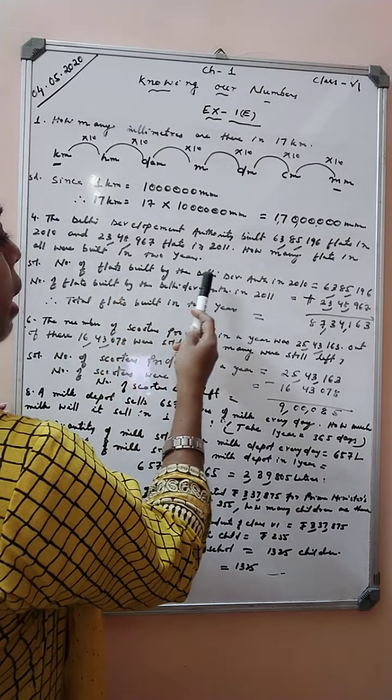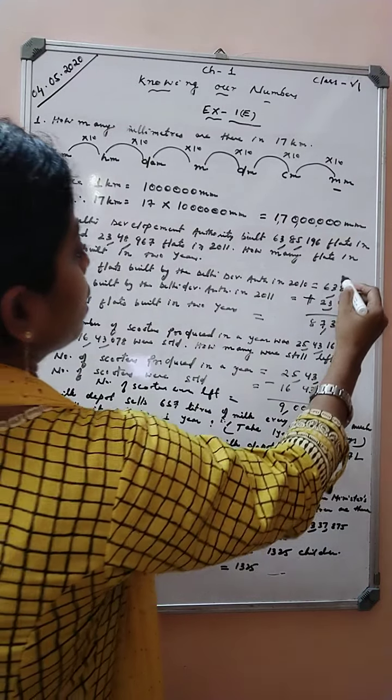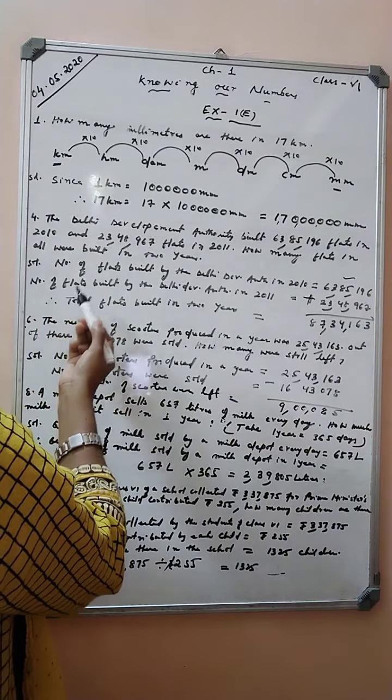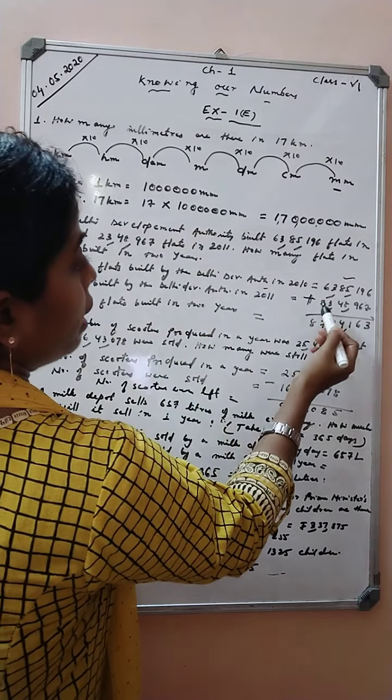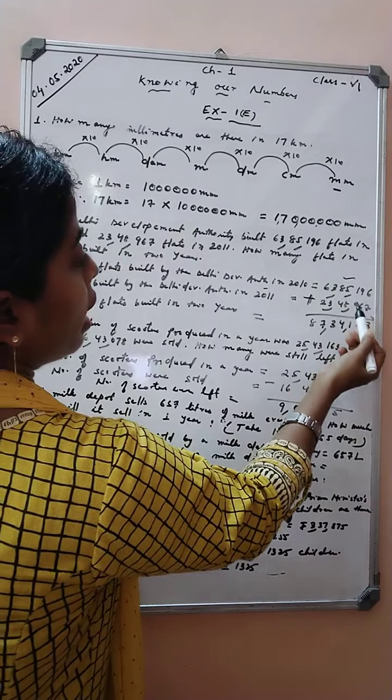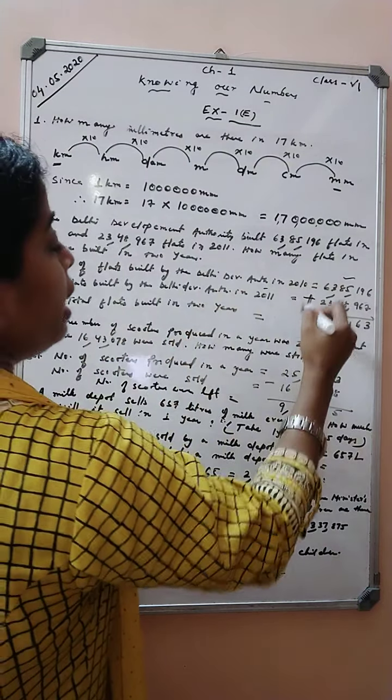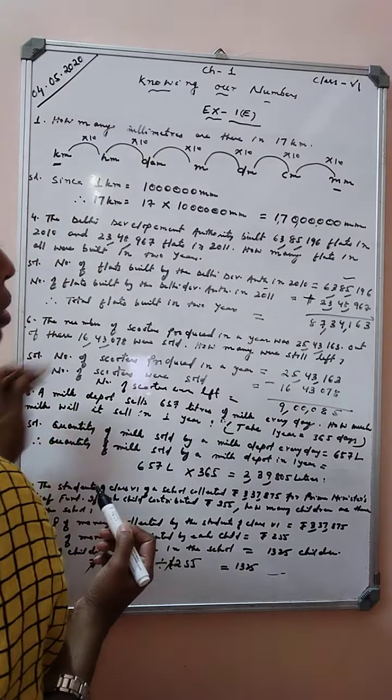Number of flats built by Delhi Development Authority in 2010: 63,85,196. Number of flats built in 2011: 23,48,967. Therefore, total flats built in 2 years. What we will do students? We have to add these 2 numbers.